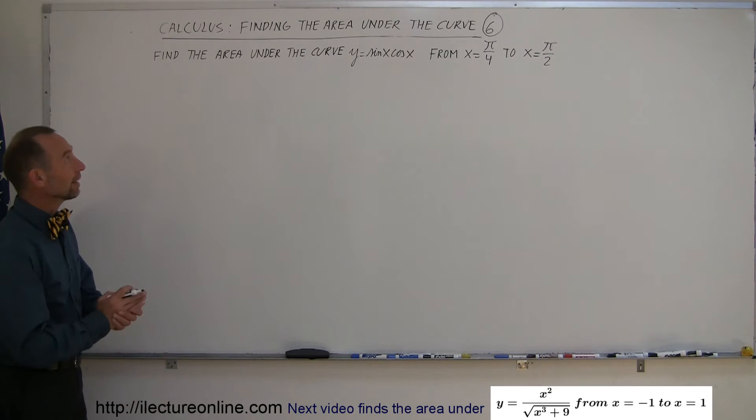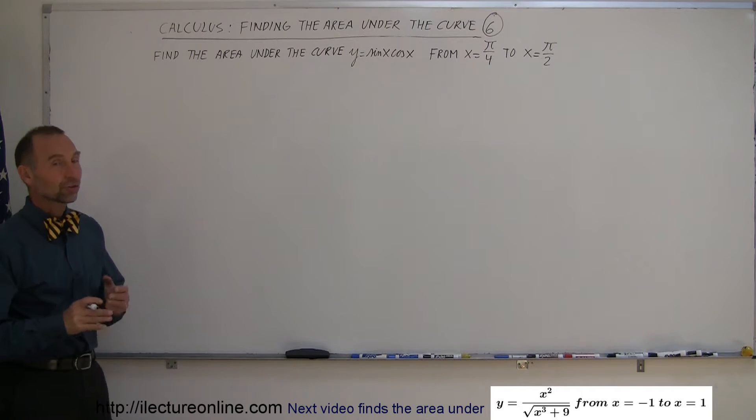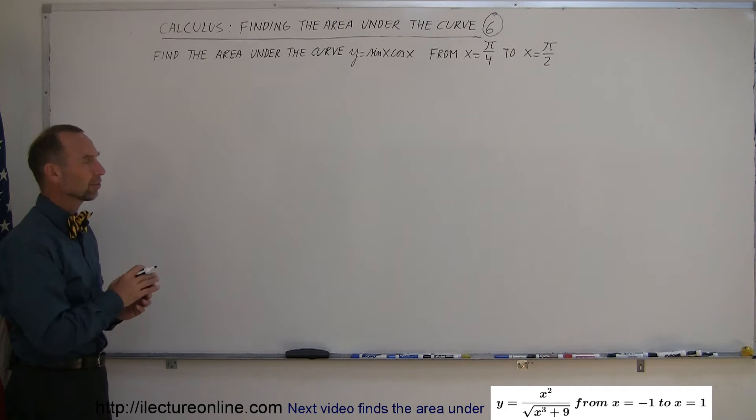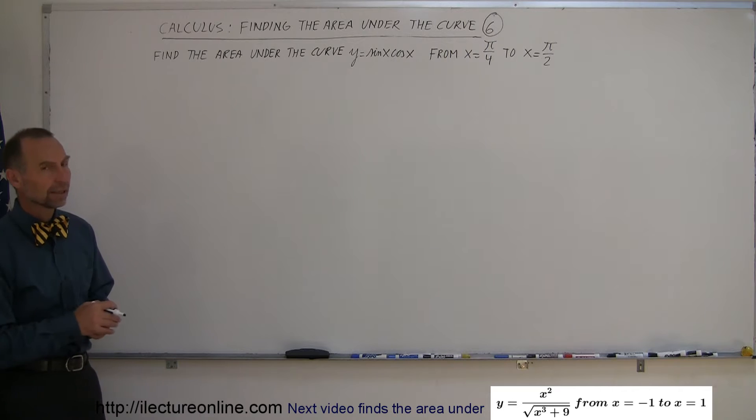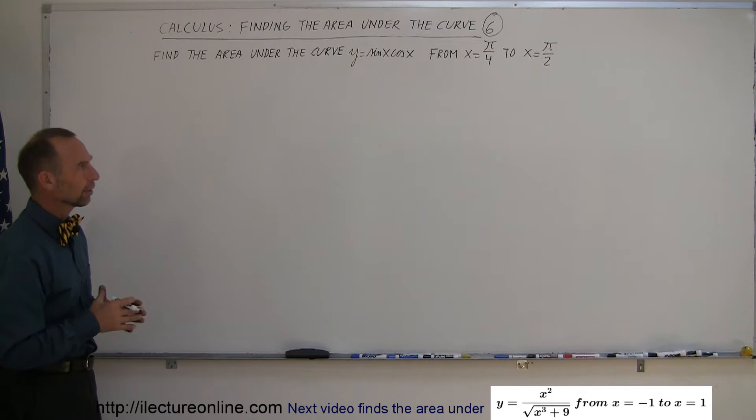Our next example of how to find the area under a curve is actually a specially chosen example to see how you work with the limits where we have to use the method of substitution to integrate the function. The function here is sine of x times cosine of x. The limits are from pi over 4 to pi over 2. So how do you integrate that and how do you find the limits and how do you find the area under the curve?